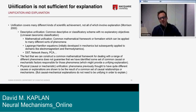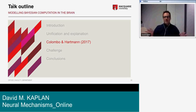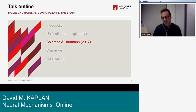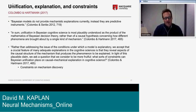The fact that we can construct a common mathematical framework for a range of different phenomena doesn't guarantee we've identified common causal or mechanistic factors — a point Colombo and Hartmann are explicit about. What matters is something like physical unification, where phenomena previously thought to have quite different causes are shown to result from a common set of causal relationships or mechanisms. But mechanistic explanations don't have to be unifying in order to explain.